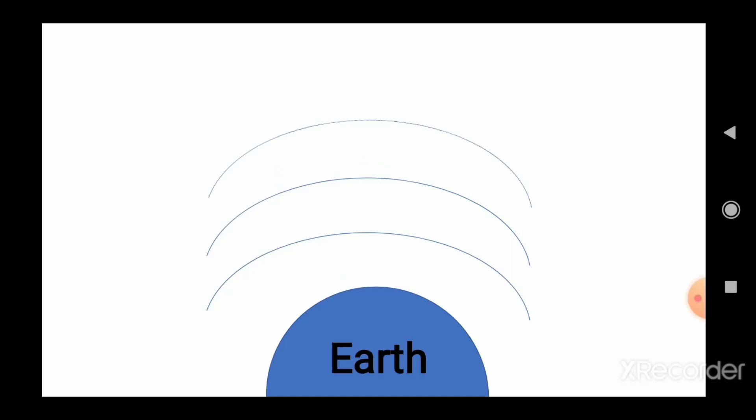We need to know first that Earth is surrounded by atmosphere and this atmosphere is not uniform. There are atmospheric layers. These layers are known as troposphere, stratosphere, mesosphere, and thermosphere.